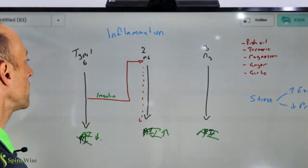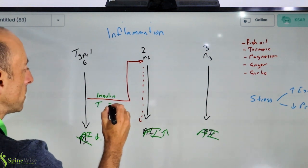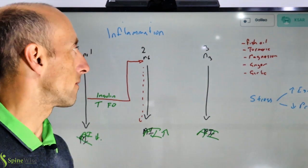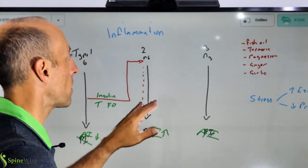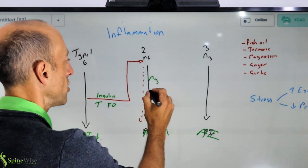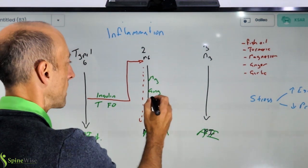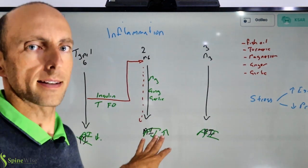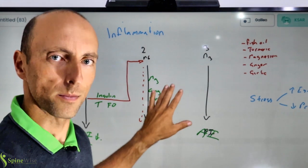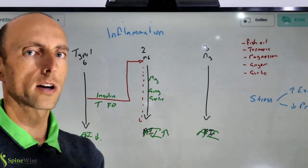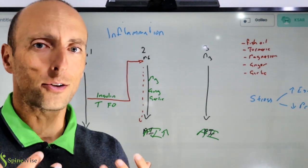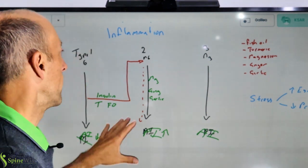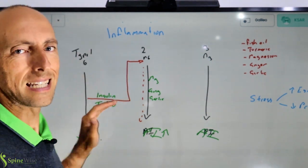There are things you can do to influence this pathway. Turmeric and fish oil both affect it — this is one of the ways they act as anti-inflammatories. We also know that magnesium, ginger, and garlic affect this pathway. Shiitake mushrooms also influence it. There are many foods we can include in our diet that act as anti-inflammatory agents and make a big difference. But again, the biggest thing is getting insulin under control — that is the most important factor of all.